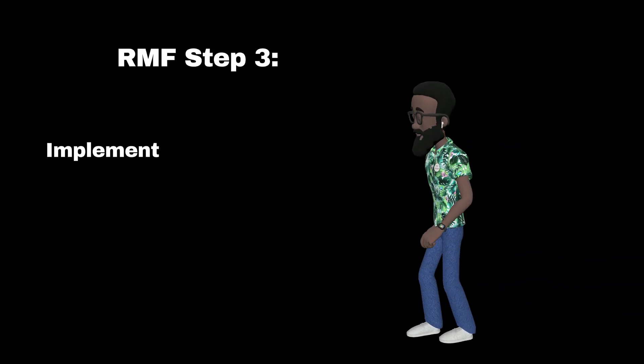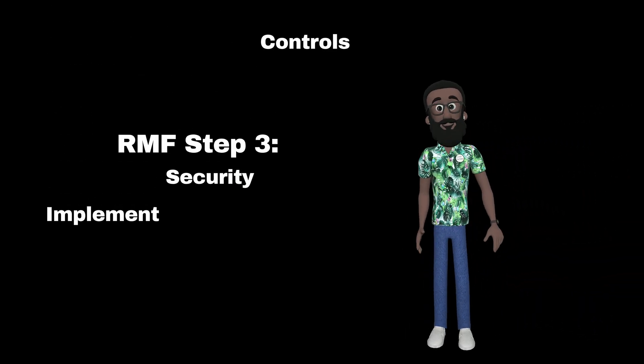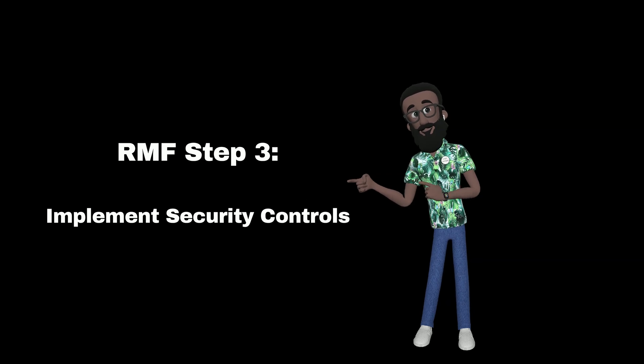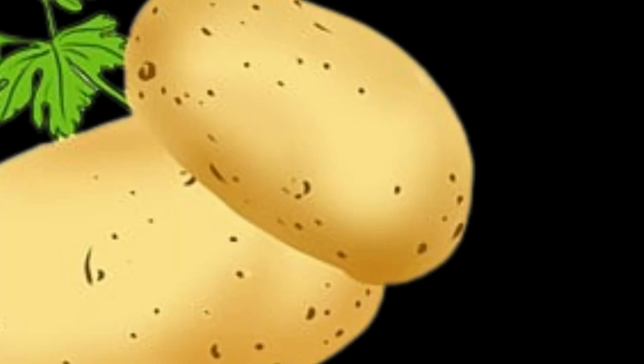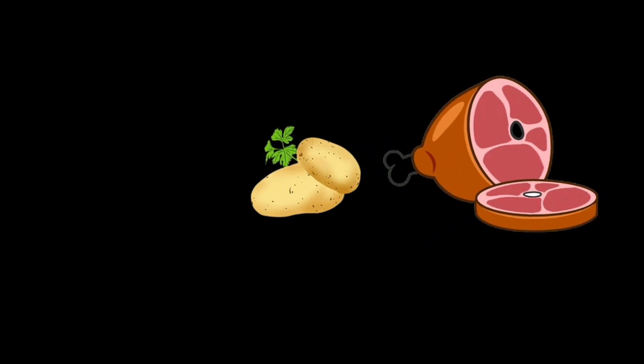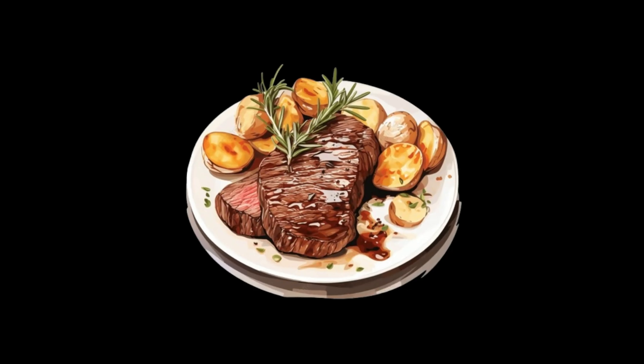I hope you're excited to start RMF Step 3: implement security controls. What we've done up to now was the potato — this part is the meat of your SSP. Get it? Meat and potatoes?